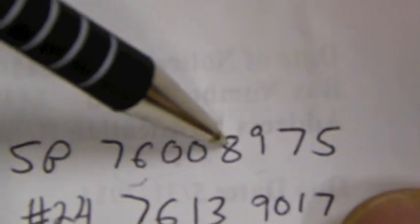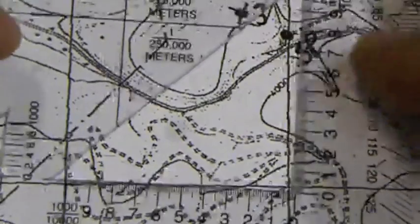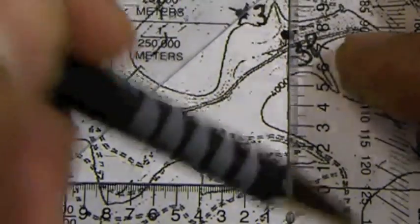Now we have to work with 8975. We already have the line for 89 for the grid square. So we have to move 75.